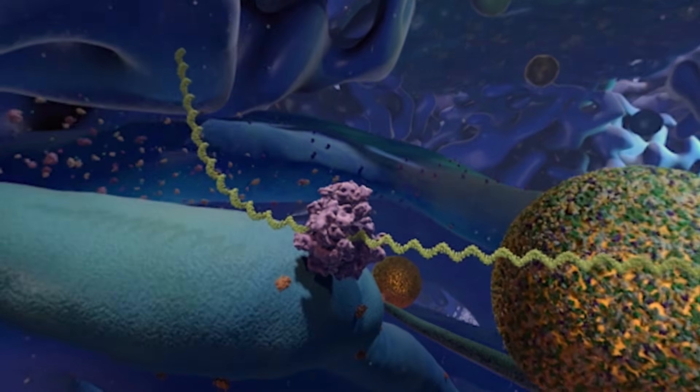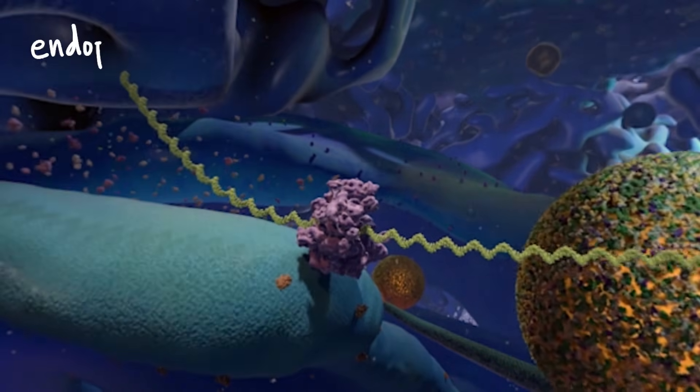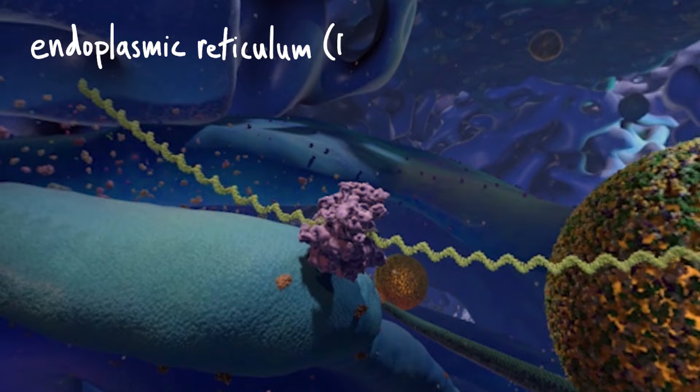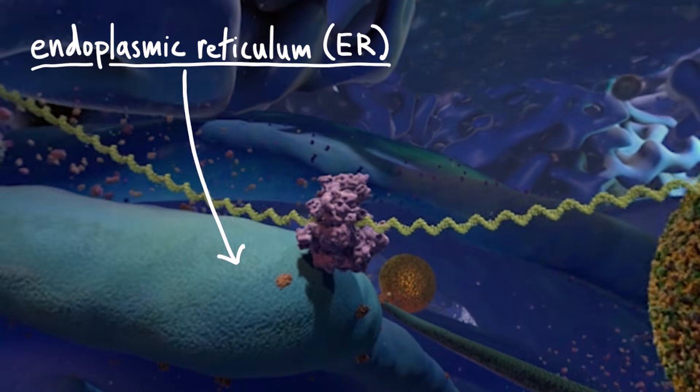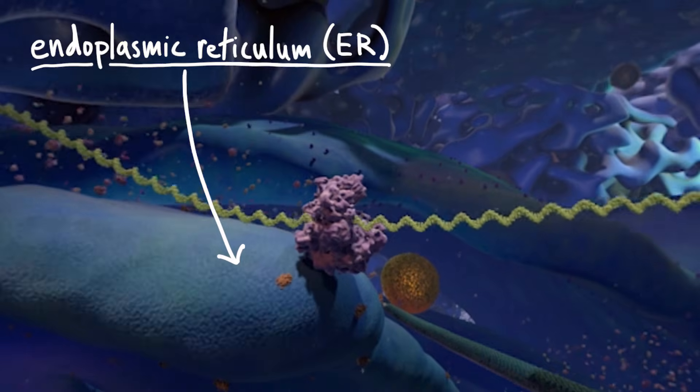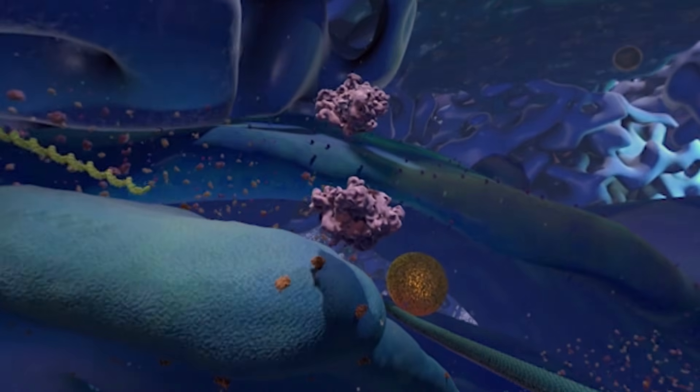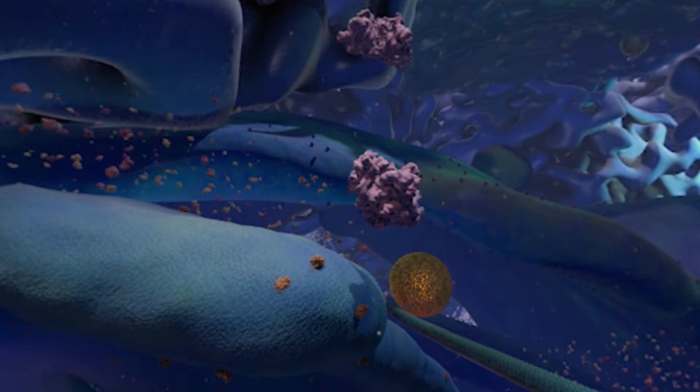The ribosome and mRNA attach to part of an organelle called the endoplasmic reticulum, or ER. The ribosome reads the instructions on the mRNA as it moves through, and it uses these instructions to build a new protein.